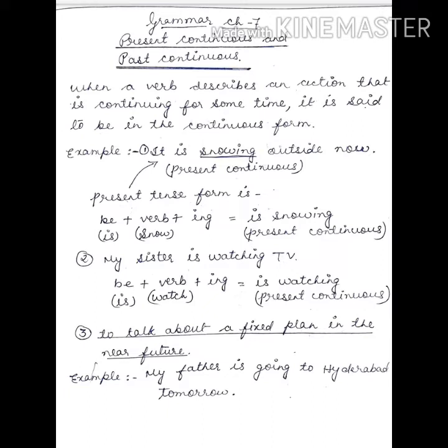Here we have to use be plus verb plus ing. 'Is snowing' is present continuous. 'My sister is watching TV' - here also be plus verb plus ing. 'Is watching' is present continuous.